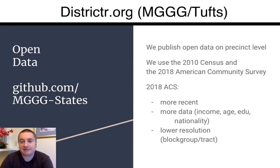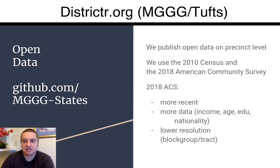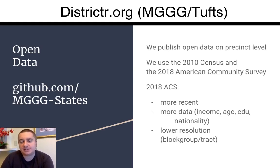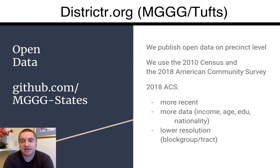We have been publishing our own open data — not on OpenStreetMap, but just so people have access to the same precinct and election data that we use, which we have verified with different state and county election boards. We also use the 2018 ACS for more recent data that has more detailed information about income, age, and education, which I think is a big part of understanding a community or preparing for the 2020 census information.